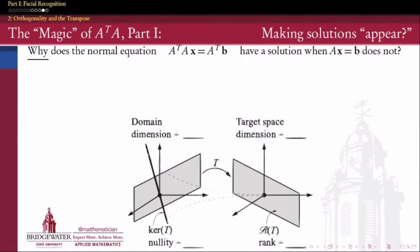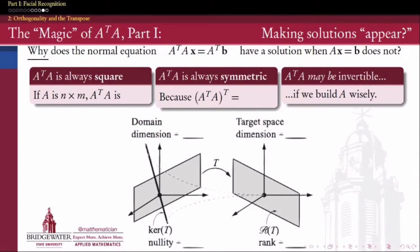So the matrix A transpose A has three important properties to linear algebra. The first of those properties is that A transpose A, regardless of whether A is a rectangular matrix, A transpose times A is guaranteed to be square.